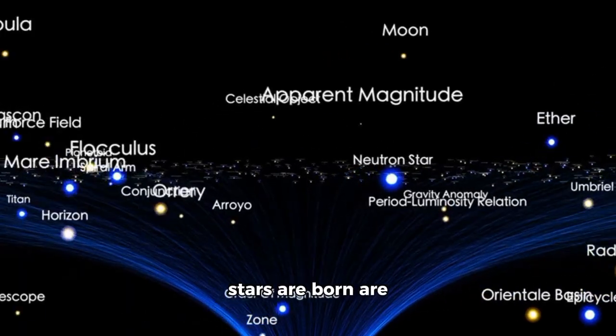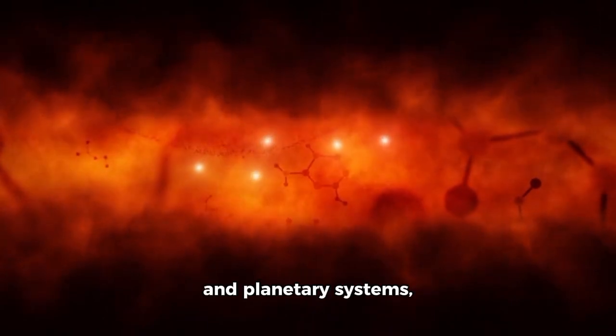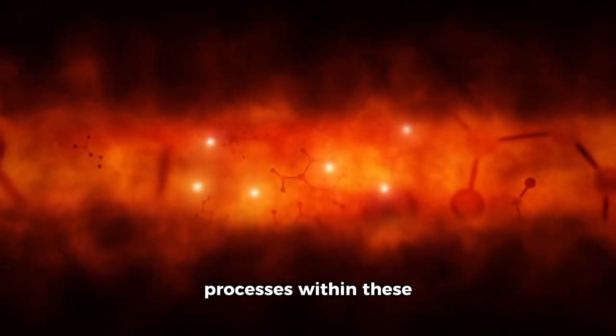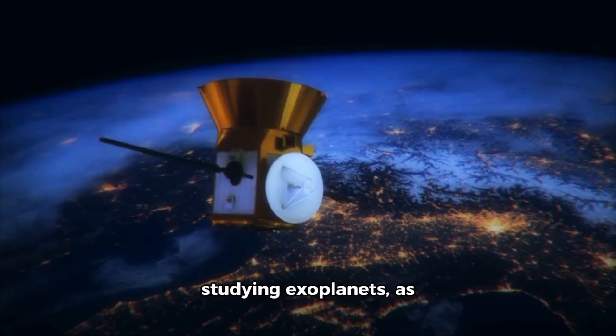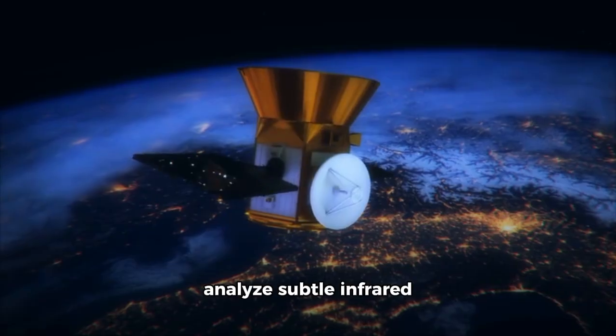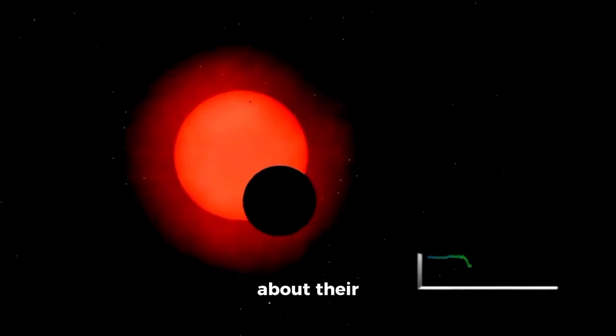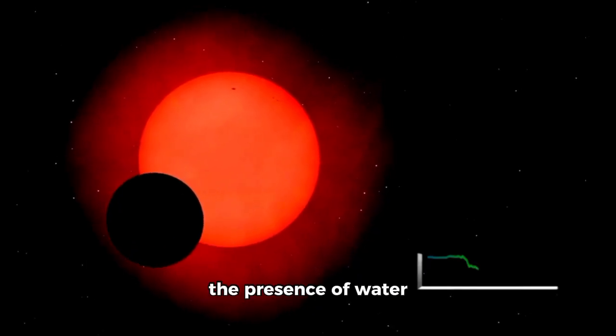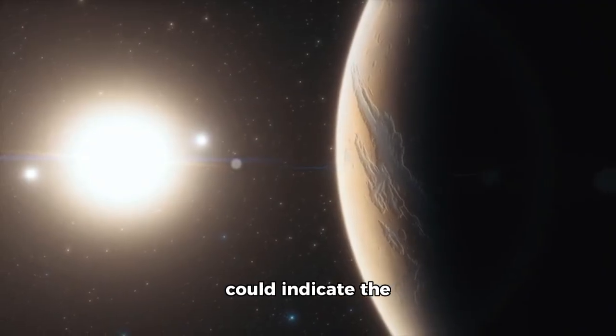The regions where stars are born are especially enthralling. These areas, filled with gas and dust clouds, obscure visible light while permitting infrared radiation to pass through. With MIRI, scientists can now observe star formation and planetary systems, delving into the physical processes within these cosmic nurseries. MIRI is also crucial for studying exoplanets, as it can detect and analyze subtle infrared radiation from their environments, revealing important information about their surroundings, including the presence of water vapor, carbon dioxide, and other molecules that could indicate the potential for life.